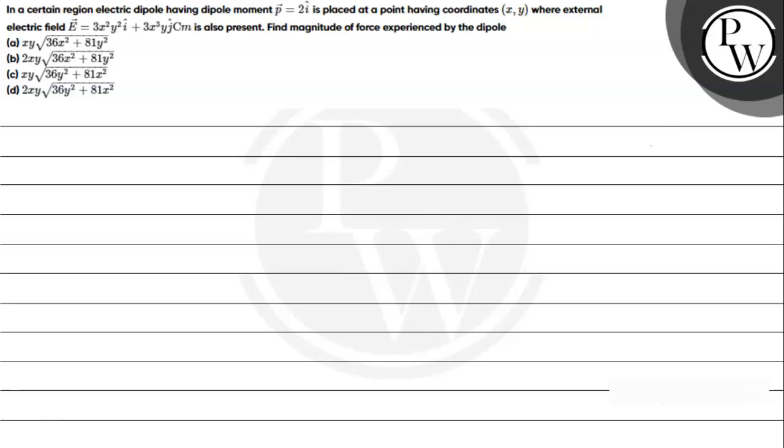Hello vacho, let's take a given question. The question says: in a certain region, an electric dipole having dipole moment p bar equals 2 i cap is placed at a point having coordinates (x, y) where external electric field E bar equals 3x²y² i cap plus 3x³y j cap coulomb per meter is also present.